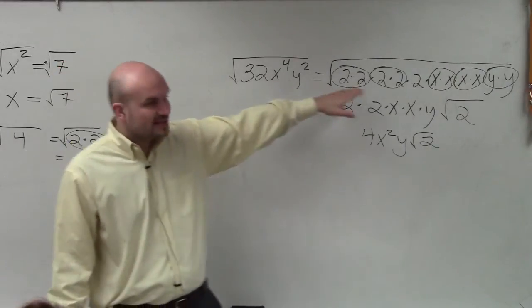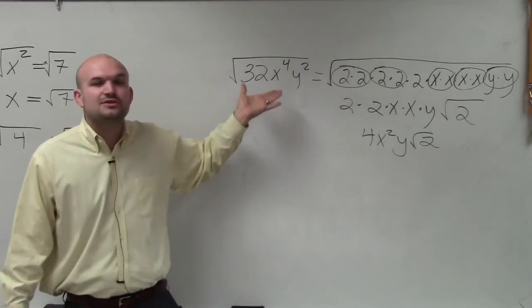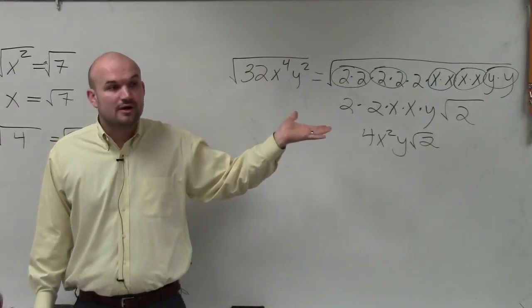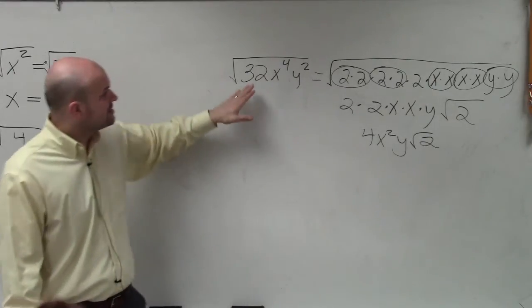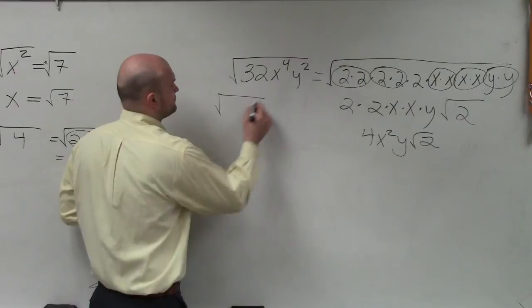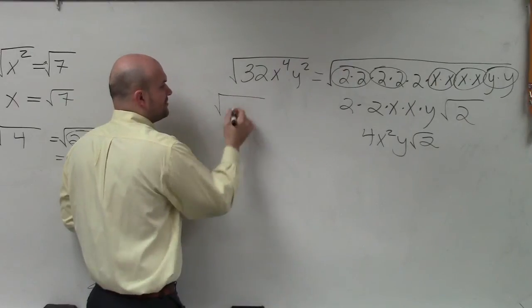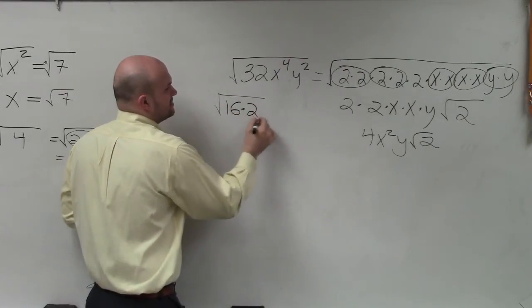So a lot of times what I prefer to do is rather than breaking it down into prime numbers, break it down into the largest number you know you can take the square root of, which we call square numbers. So I can break down 32 into 16 times 2.